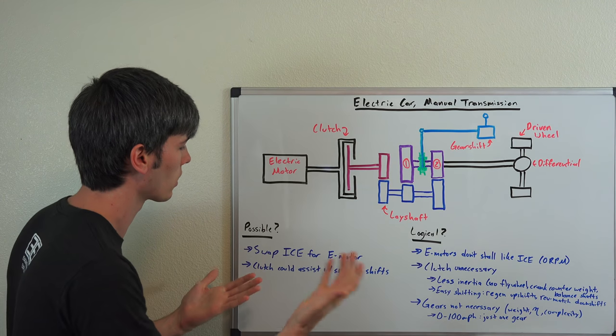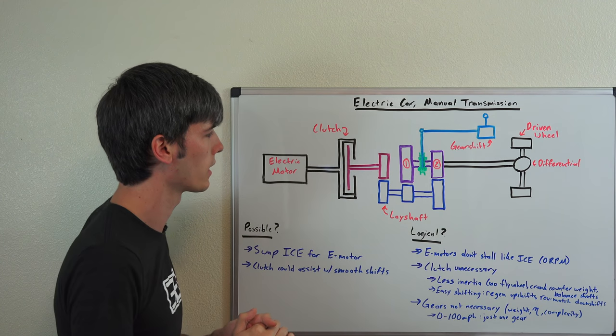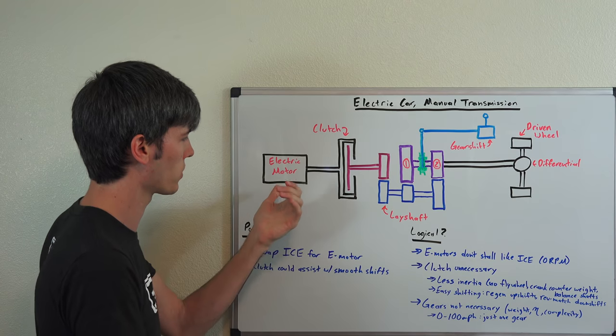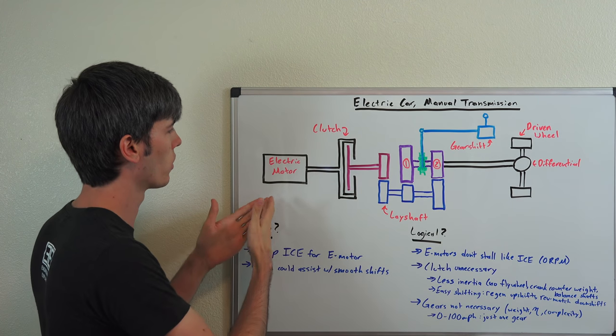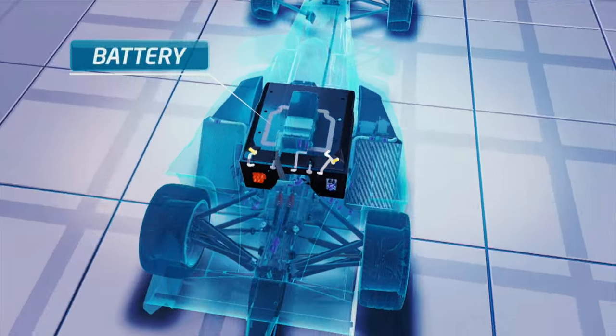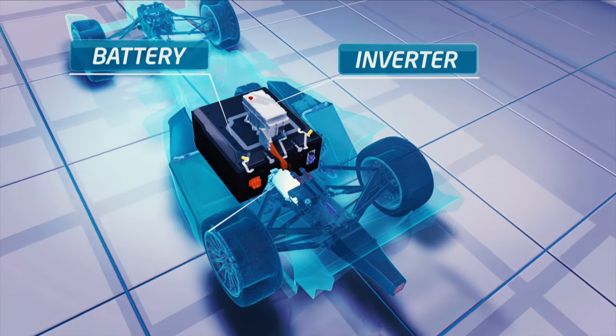So ultimately, yes, it's very simple to implement and a clutch could assist you in a scenario like this for gear shifts. Basically all you're doing is swapping out the internal combustion engine for an electric motor. Of course you have to have the controllers and the battery and that kind of thing, but it could be done.